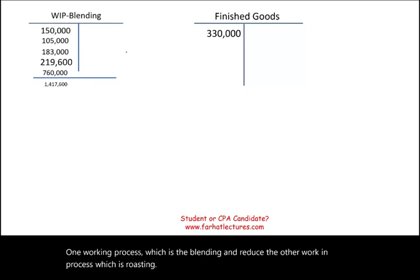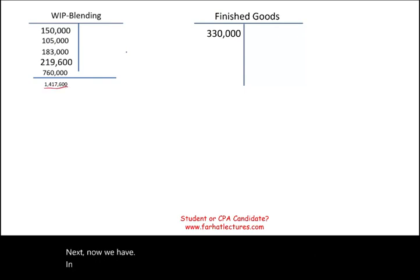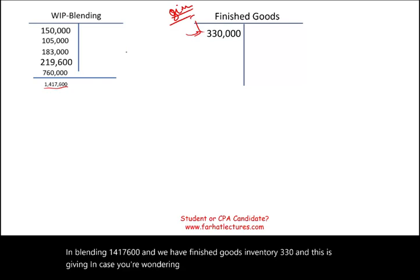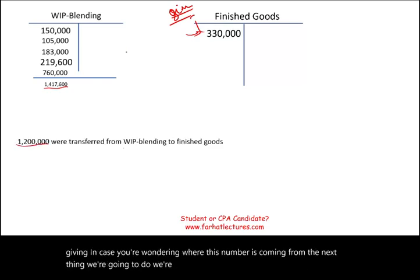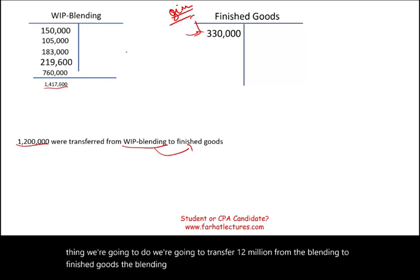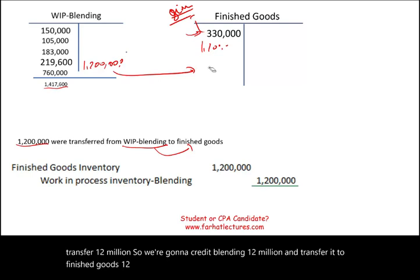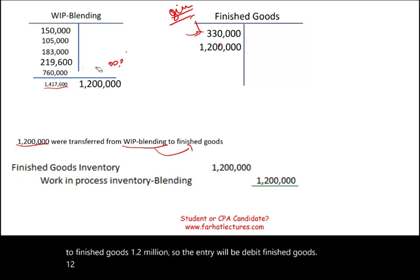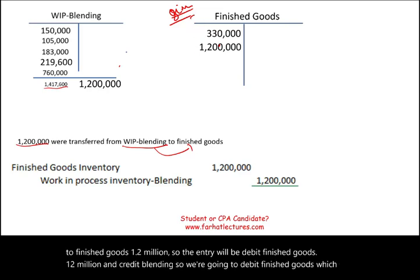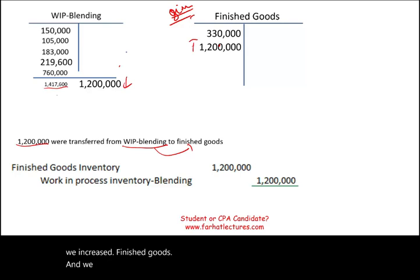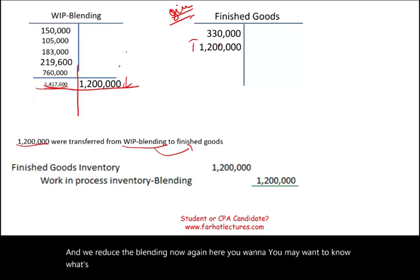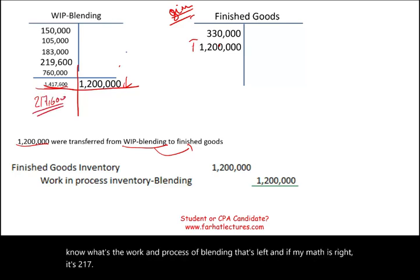Now we have work in process blending at $1,417,600 and a beginning finished goods inventory of $330,000. Since blending is the last department, we transfer $1,200,000 from blending to finished goods — debit finished goods $1,200,000 and credit work in process blending $1,200,000. The ending work in process balance for blending is $217,600.